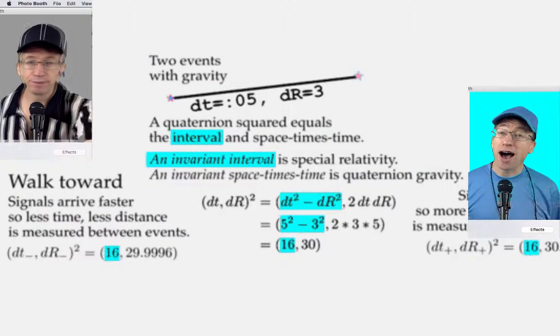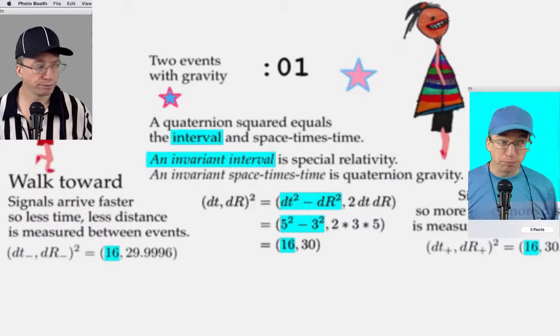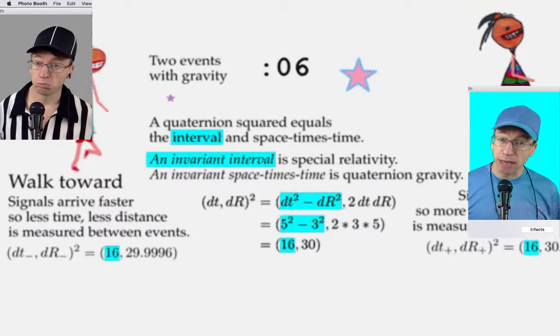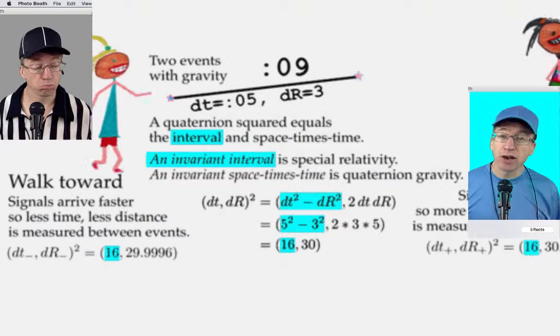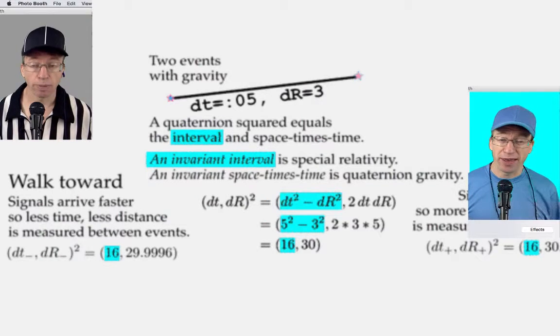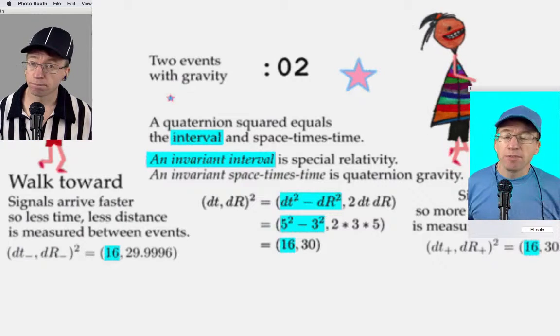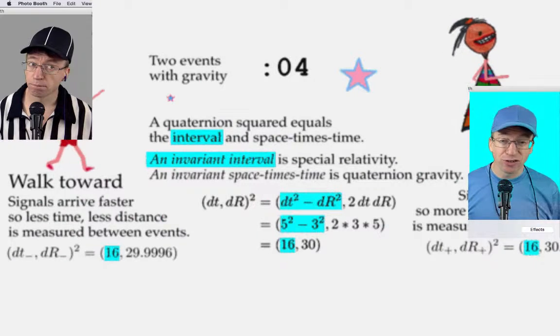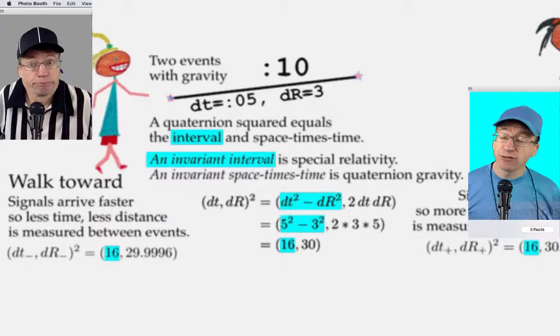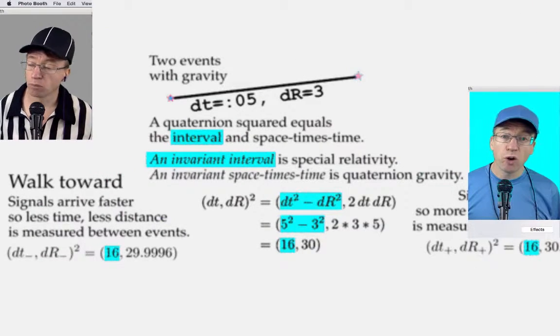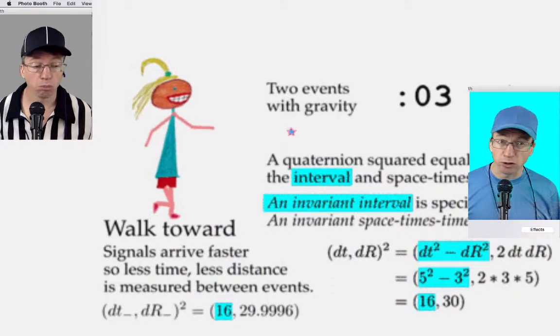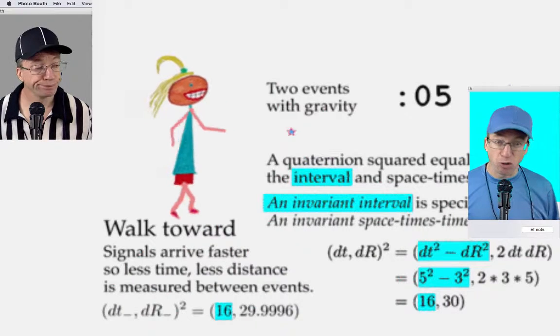Hello, I'm Special Relativity Doug in blue. Everything on this page that's blue is about special relativity. It says that a quaternion squared equals an interval, the important thing, and the space-times-time, because an invariant interval is special relativity. So what does that mean exactly? Well, let's focus on that girl who's walking towards the events. She's going to get the news sooner about these explosions because she's going towards the action.